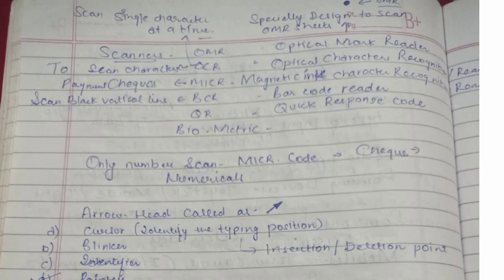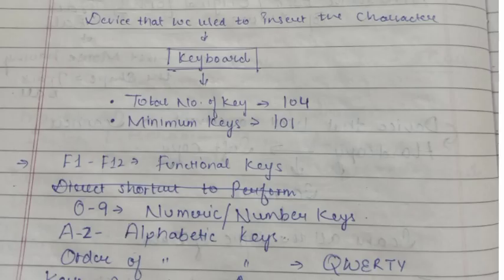The next device used to insert characters is the keyboard. The total number of keys in the keyboard is 104; the minimum number of keys is 101. F1 to F12 are functional keys, and 0 to 9 are numerical keys or number keys.